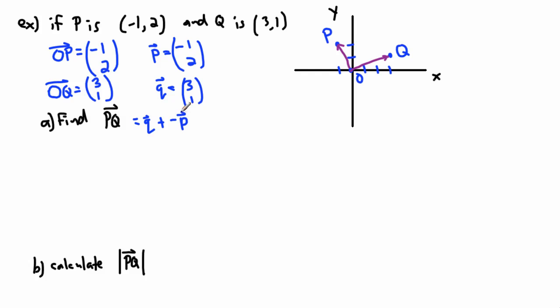That I know how to do. So this is (3, 1) plus negative P. Negative P just means I change the sign of all of them. So negative one becomes plus one, and positive two becomes negative two. I just add those up - three plus one is four, one minus two is negative one. This should be my answer, the vector that goes from P to Q.